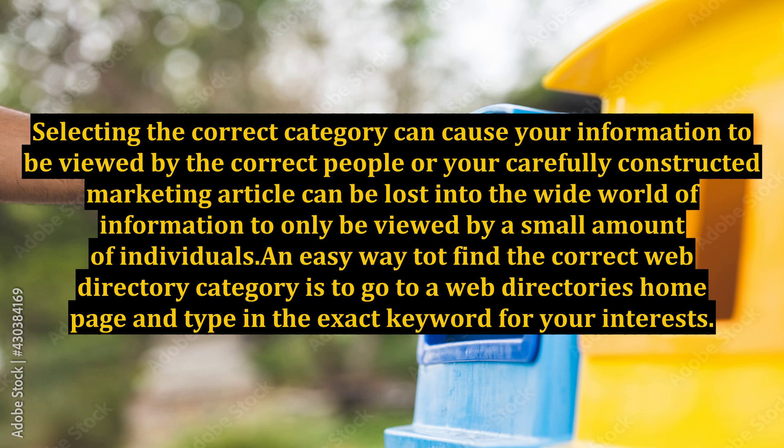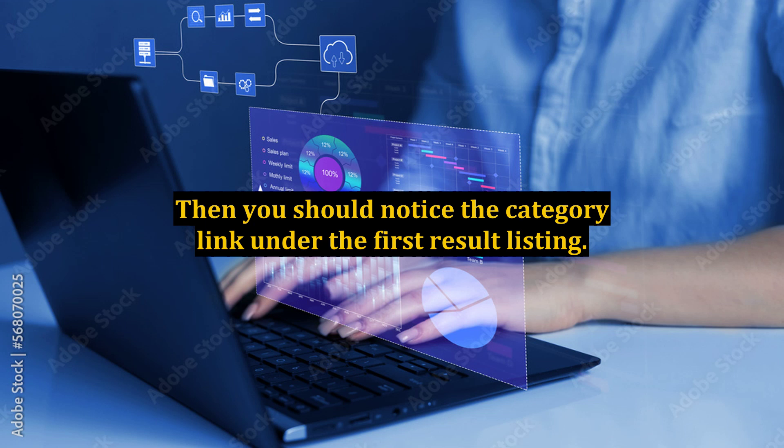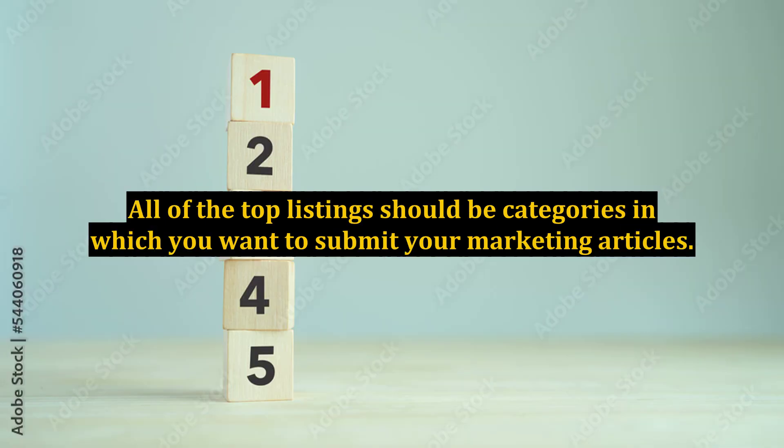An easy way to find the correct web directory category is to go to a web directory's homepage and type in the exact keyword for your interests. Then you should notice the category link under the first result listing. All of the top listings should be categories in which you want to submit your marketing articles.